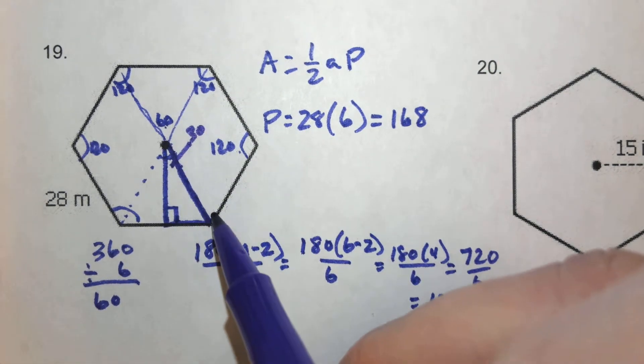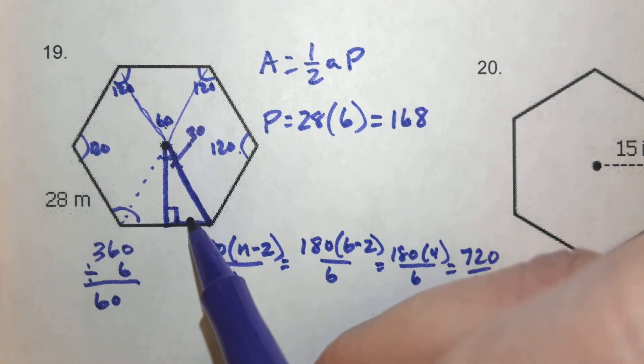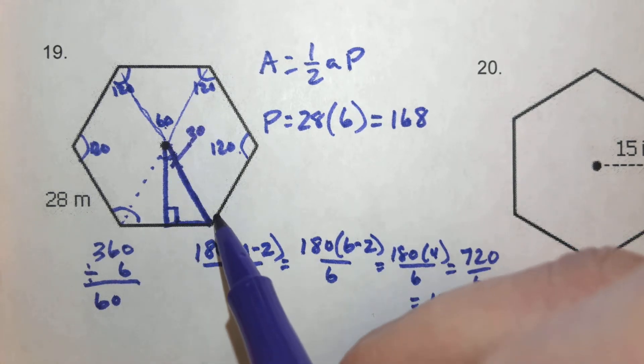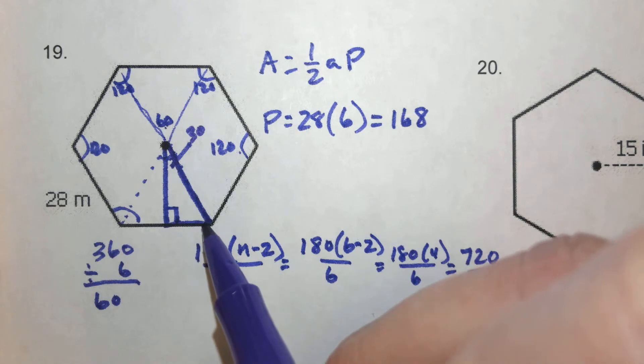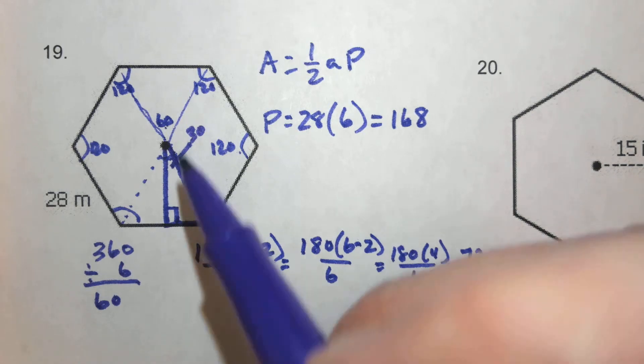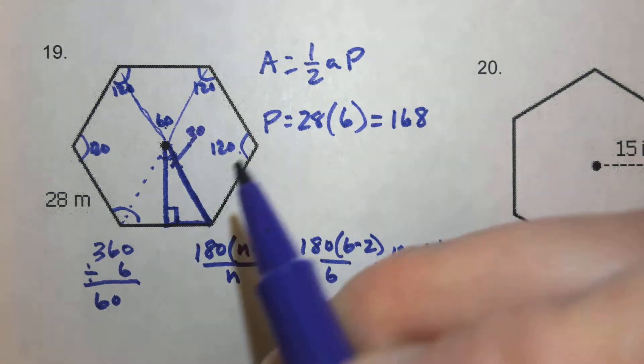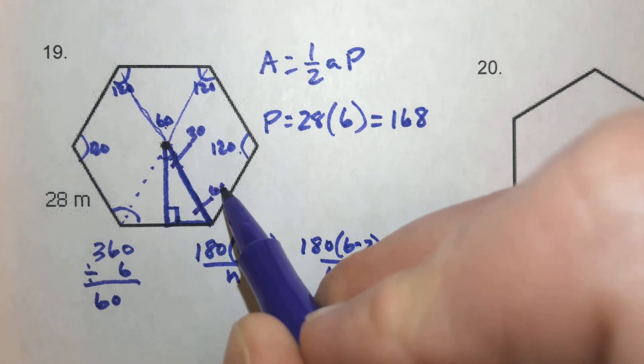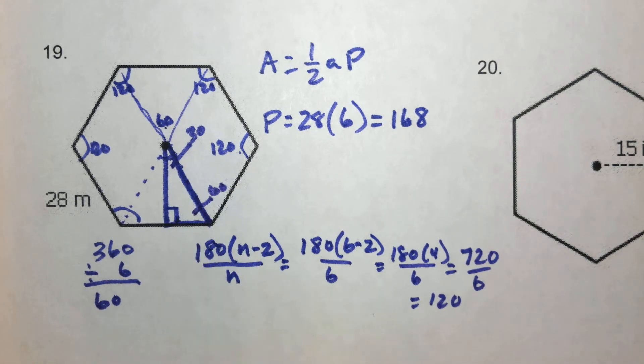This angle down here, we found out that this whole angle is 120 degrees. So if we split that in half, because that radius is going to split that angle in half as well, then this has to be half of the 120, which is 60 degrees. So here we have a 30-60-90 triangle.